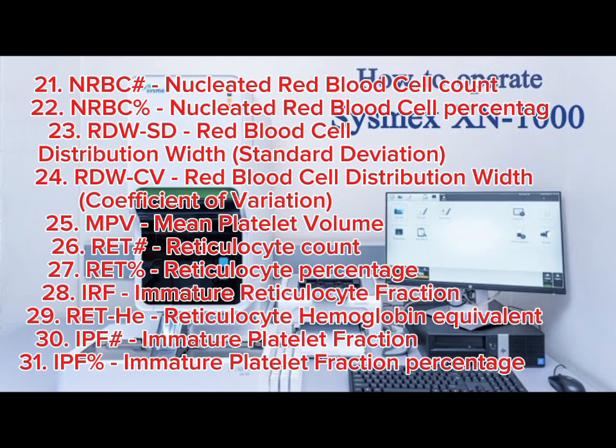26: RET# – Reticulocyte Count. 27: RET% – Reticulocyte Percentage. 28: IRF – Immature Reticulocyte Fraction. 29: RET-He – Reticulocyte Hemoglobin Equivalent. 30: IPF# – Immature Platelet Fraction Count. 31: IPF% – Immature Platelet Fraction Percentage.